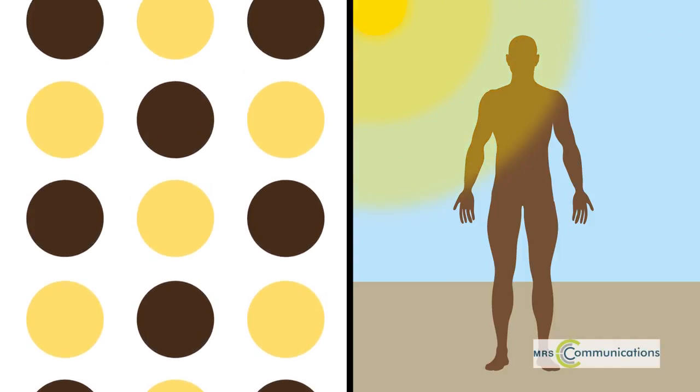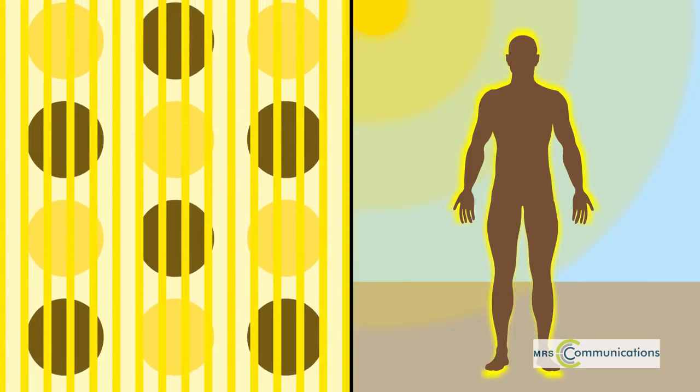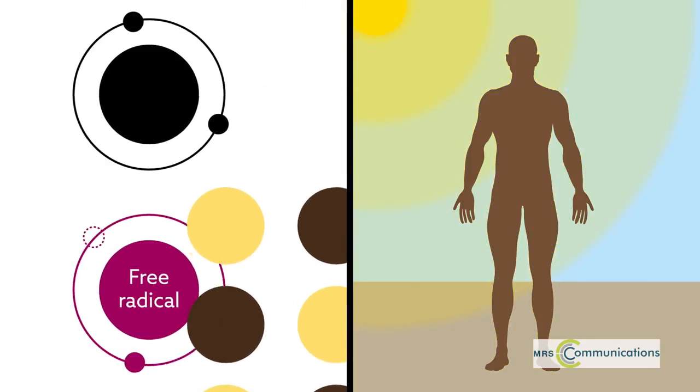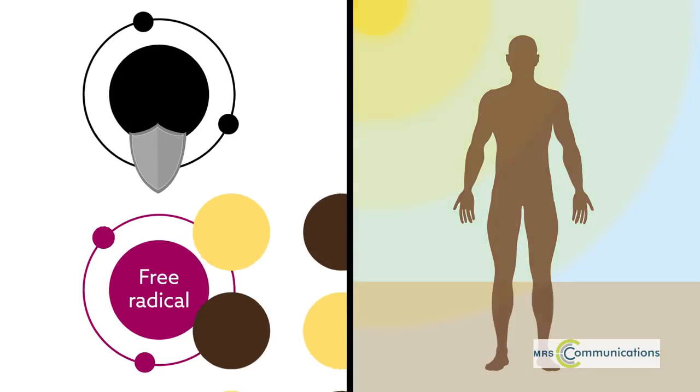Melanin is a versatile molecule. Not only is it responsible for giving us our UV-blocking complexion, at the cellular level, it gobbles up harmful radicals that lead to diseases such as cancer and Parkinson's. But that's only the beginning.